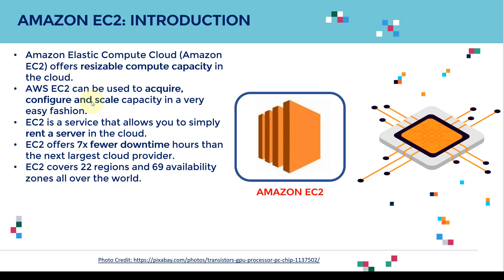Instead of buying physical hardware — buying GPUs and CPUs to train your AI and ML models — you can simply rent this hardware by leveraging EC2, and AWS will take care of all the management and configuration for you. You just need to select what type of instance you are looking to use. AWS EC2 can be used to acquire, configure, and scale capacity very easily. It offers seven times fewer downtime compared to the next largest cloud provider, and EC2 covers 22 regions and 69 availability zones all over the globe.